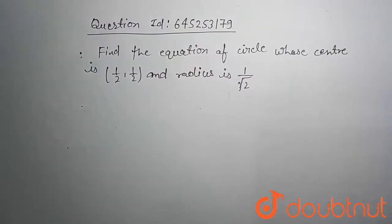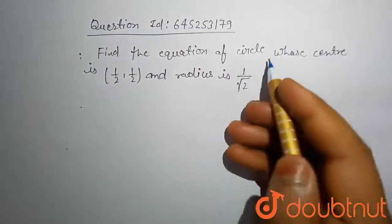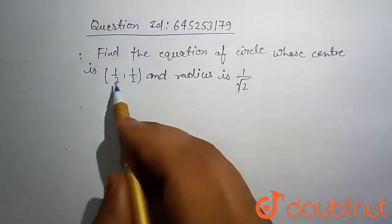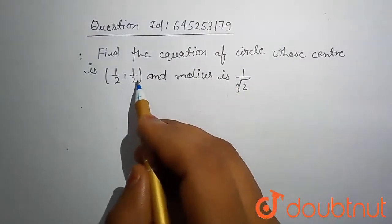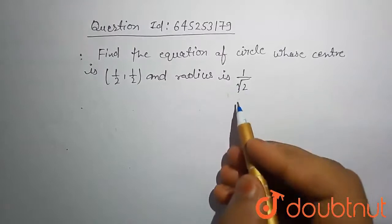Hello friends, today our problem is, find the equation of circle whose center is 1 by 2, 1 by 2 and radius is 1 by root 2.